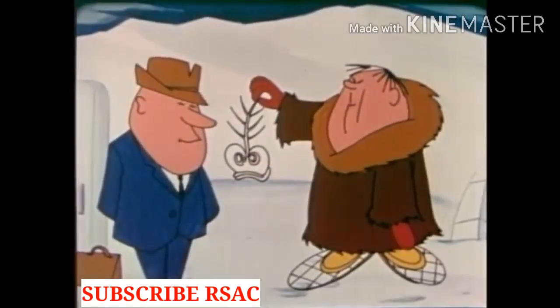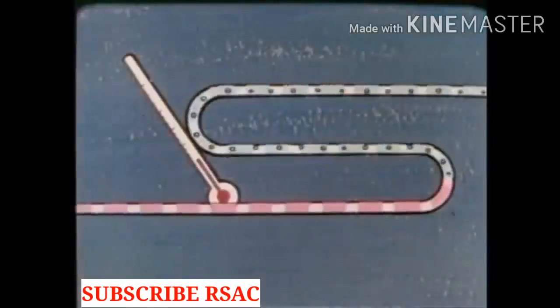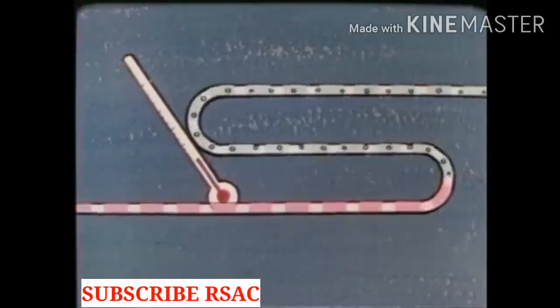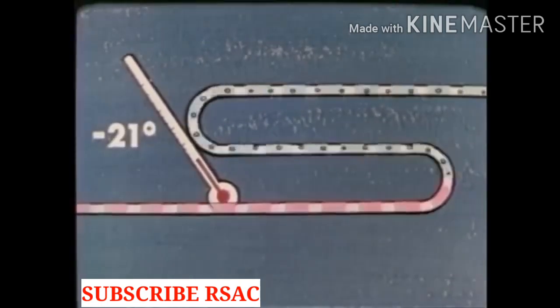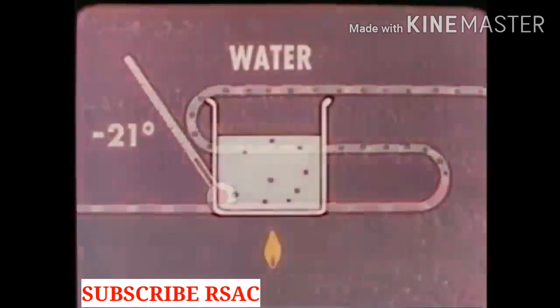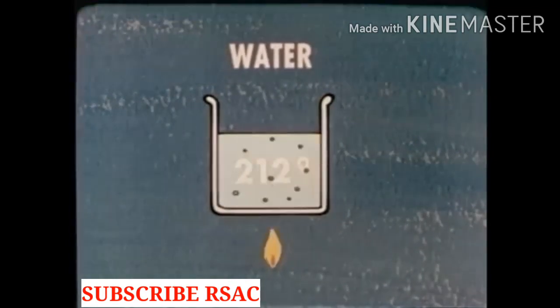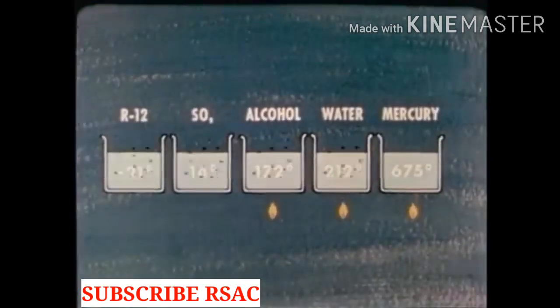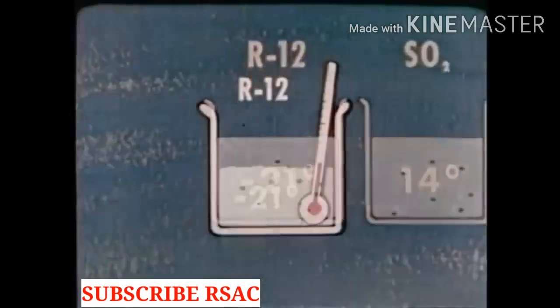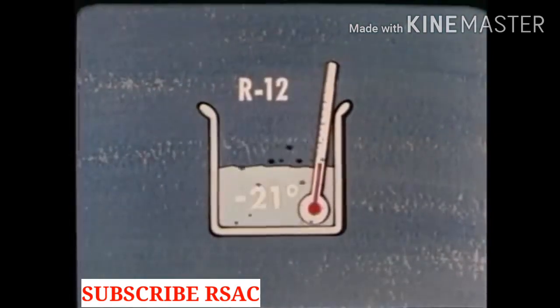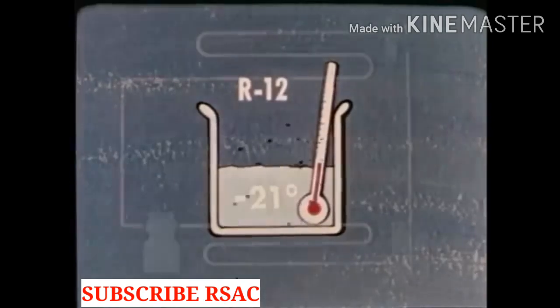Now let's consider some additional points that many refrigeration students have trouble understanding. In the evaporator the temperature may be very low, perhaps 21 degrees below zero, and yet the refrigerant is boiling. How can anything boil at such a low temperature? Water boils at 212 degrees, but other substances boil at other temperatures, some higher than water, some lower. The refrigerant known as R12 boils at minus 21 degrees. There's no mystery about it, it's simply a property of the substance.